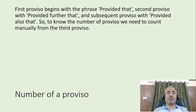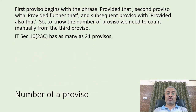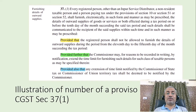Number of provisos: the first proviso begins with the phrase 'provided that', the second proviso with 'provided further that', and subsequent provisos with 'provided also that'. To know the number of provisos, we need to count manually from the third proviso. For instance, income tax section 10 subsection 23C has as many as 21 provisos. Instances of provisos can be seen in section 37 of the GST Act, which has three provisos: the first — 'provided that' (shown in yellow), the second — 'provided further that' (shown in green), and the third — 'provided also that' (shown in blue).